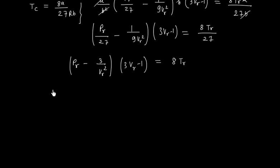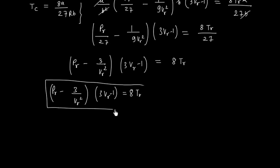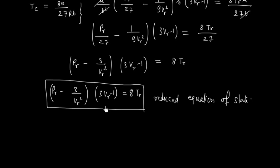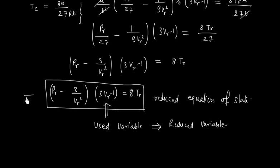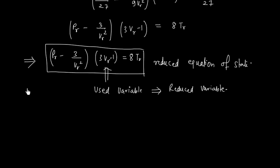This equation is called the reduced equation of state. It is called 'reduced' because it uses reduced variables — PR, VR, and TR. When the Van der Waal equation is written in terms of reduced variables, we do not need to use the Van der Waal constants A and B. This means the reduced equation of state is independent of the identity of the gas.